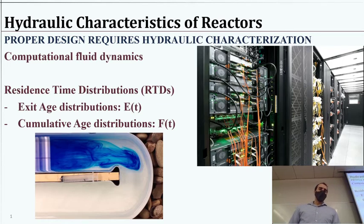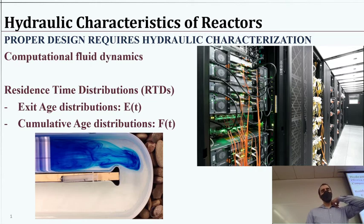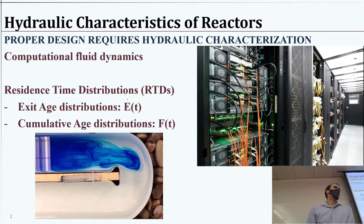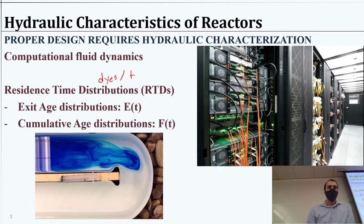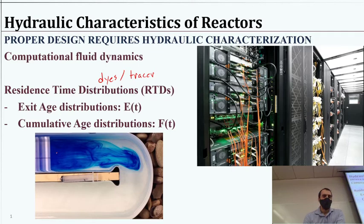In a way, the computational method gives us that same information — we could use it to give us a residence time distribution. But when I say RTDs, residence time distributions, really what I'm talking about is using some sort of tracer to observe how long the water is staying in the reactor. We'll use a dye or some other tracer that we can measure to identify how long the water is residing in the reactor.